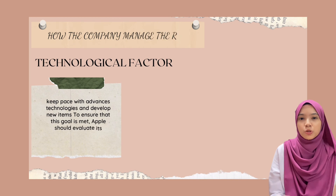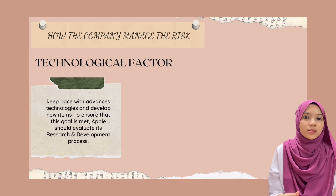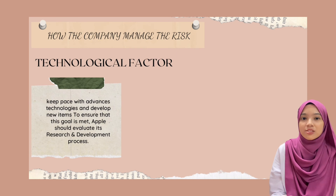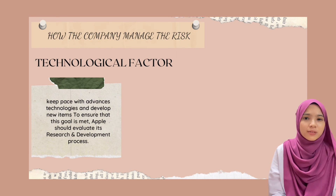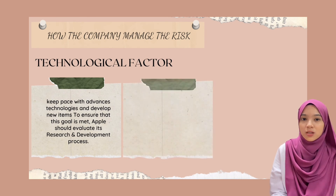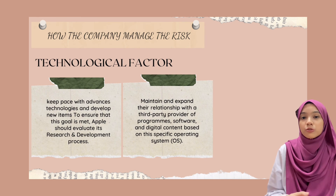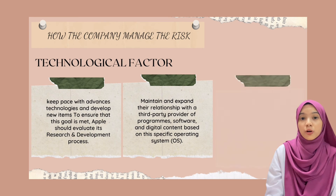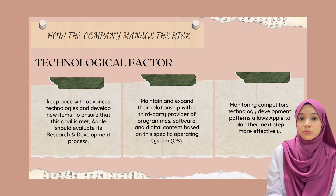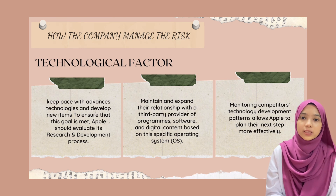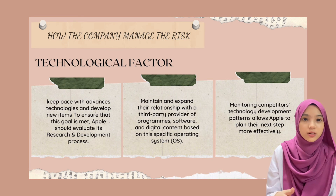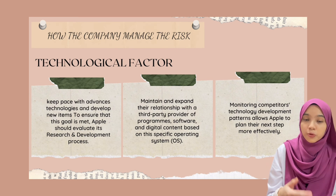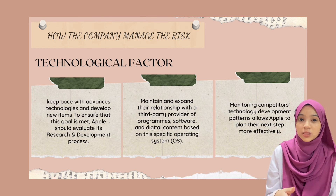The only way for the company to cope with rapid technological changes is to keep pace with advanced technologies and develop new items. To ensure this goal is met, Apple should evaluate its research and development process and develop a monitoring plan that lists goals and expectations. Besides that, Apple should maintain and expand relationships with third-party providers of programs, software and digital content based on its specific operating system. Moreover, monitoring competitors' technology development patterns allows Apple to plan its next steps more effectively. Keeping an eye on competitors' behavior and evaluating the company's current situation is useful because it gives a chance to review whether the developing strategy is appropriate and whether the company will maintain its competitive position in the future.